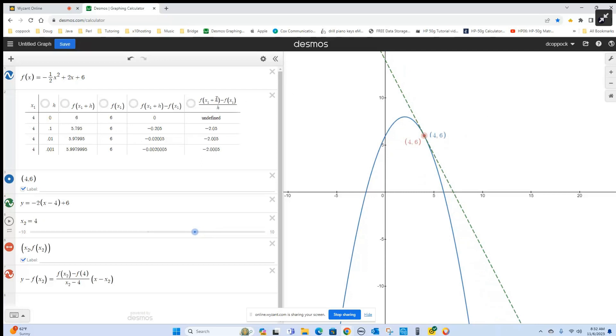When you calculate a difference quotient, you're calculating slopes of secant lines, the red dashed line. Then you're using the slope of the secant line to write the equation of the secant line. You're going to learn later in calculus that you can take the limit of the difference quotient to actually get the slope of the tangent line, and that's the only way to find the slope of the tangent line, is to use calculus.